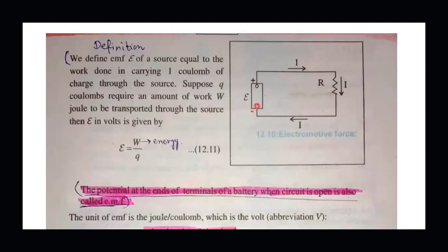The source supplies energy to the low-potential charges so that they can continue working inside the circuit. That is what we call electromotive force.